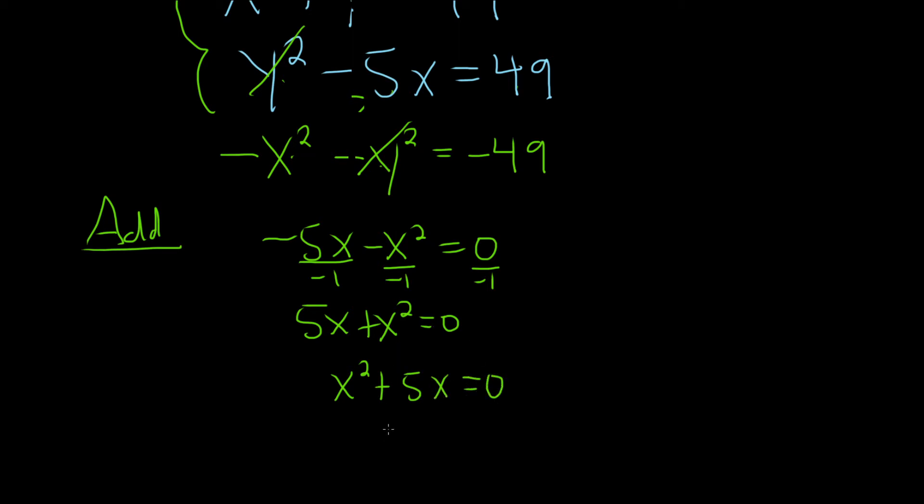And then we can actually just factor out an x. So x, parentheses, x plus 5, and that's equal to 0. Whenever you have a product equal to 0, you set each factor equal to 0. So x is 0 or x plus 5 is 0. And here in this case, we subtract and we get negative 5.